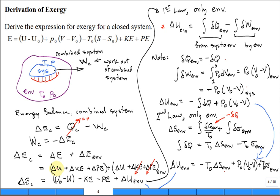Our process starts with the system at temperature T and P, so we look up U at the initial state. The final U — that is, delta U — is when the internal energy of the system has gone to U naught, meaning it's at thermal and mechanical equilibrium: temperature T naught and pressure P naught. That's the dead state. For kinetic energy, we subtract the kinetic energy at the dead state, which is zero, so it's just minus KE initial. Likewise for potential energy. All these first terms are for the system.